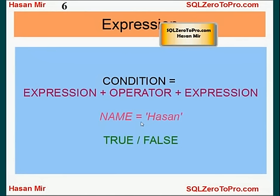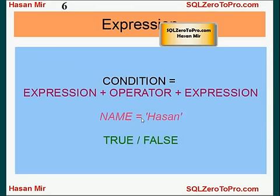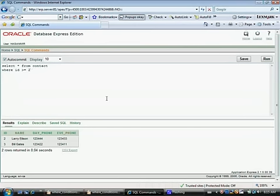Here is an example of a condition where name is equal to 'Hassan'. Name is an expression, Hassan is an expression, and the equal-to sign is a comparison operator. As you saw in the earlier example, a column name can be an expression, a constant number can be an expression, and a constant text string is called a text literal. So a text literal can be an expression as well.